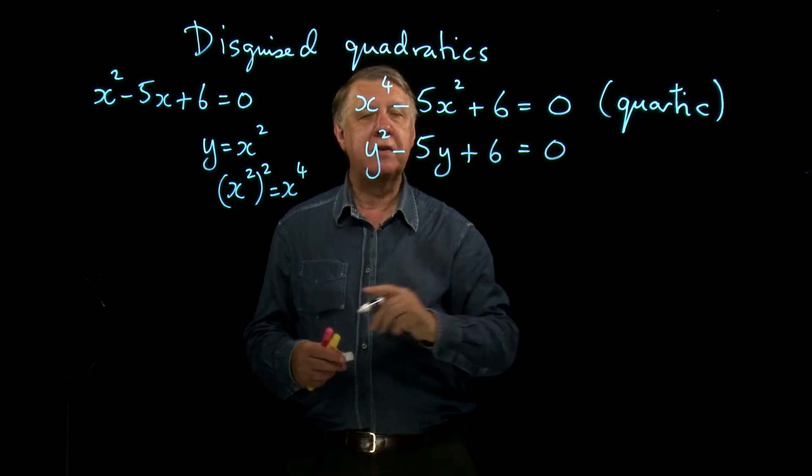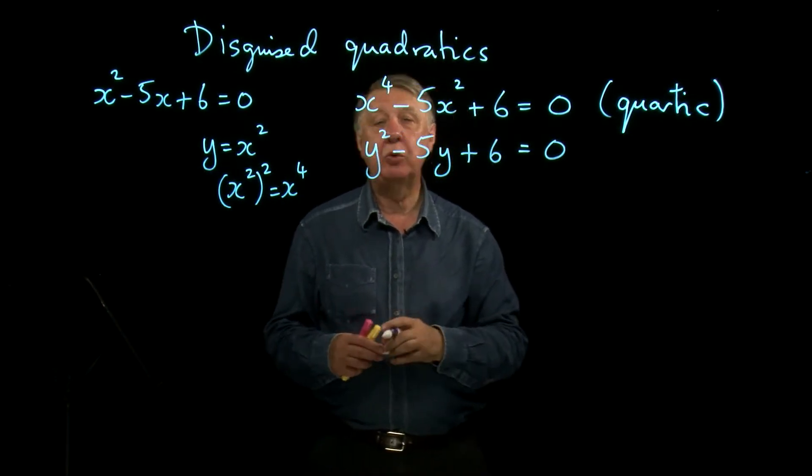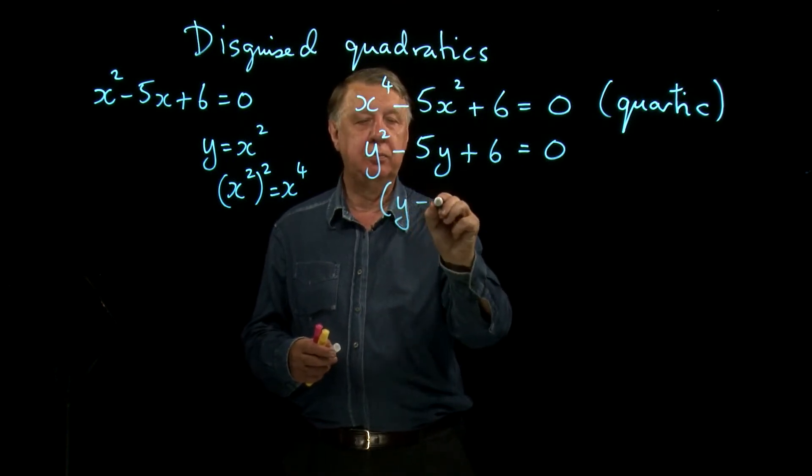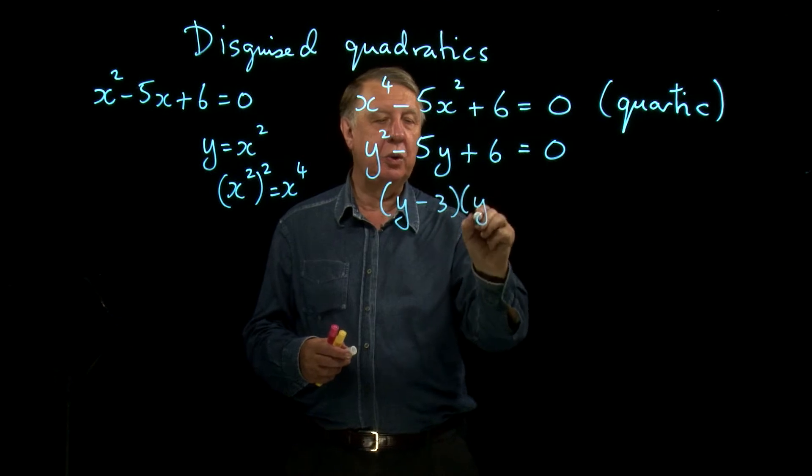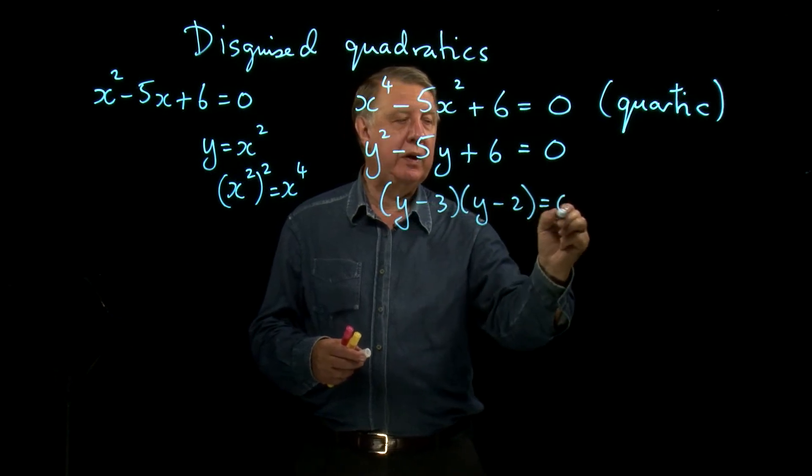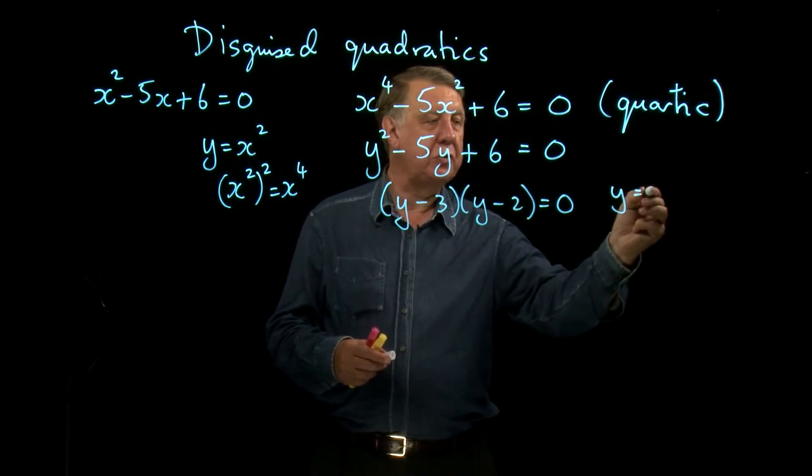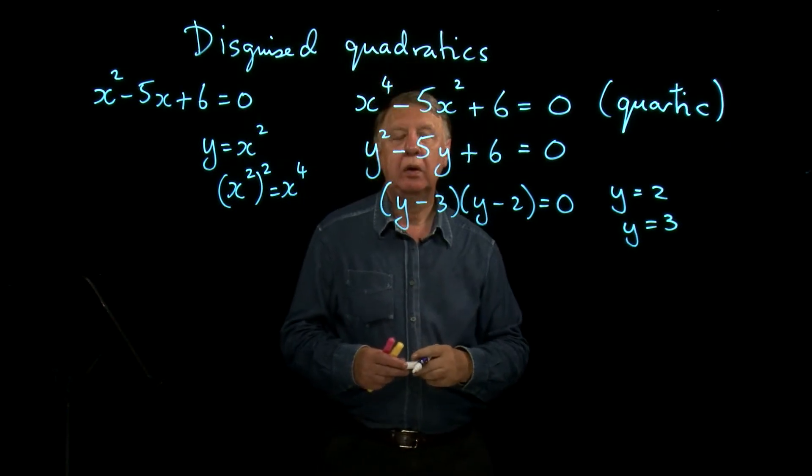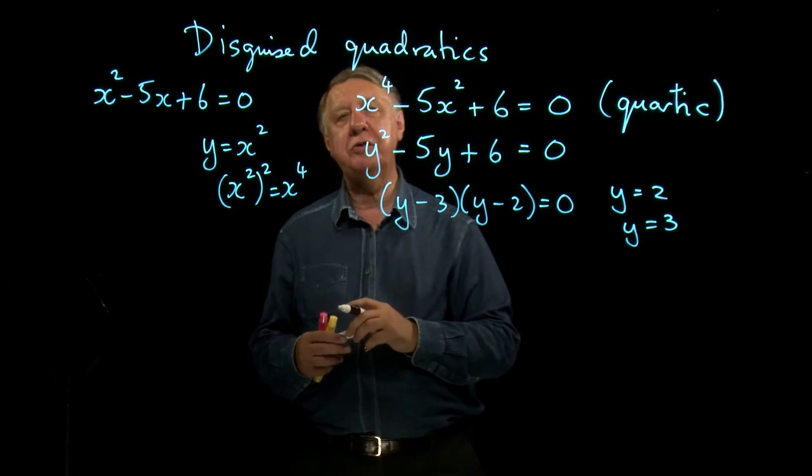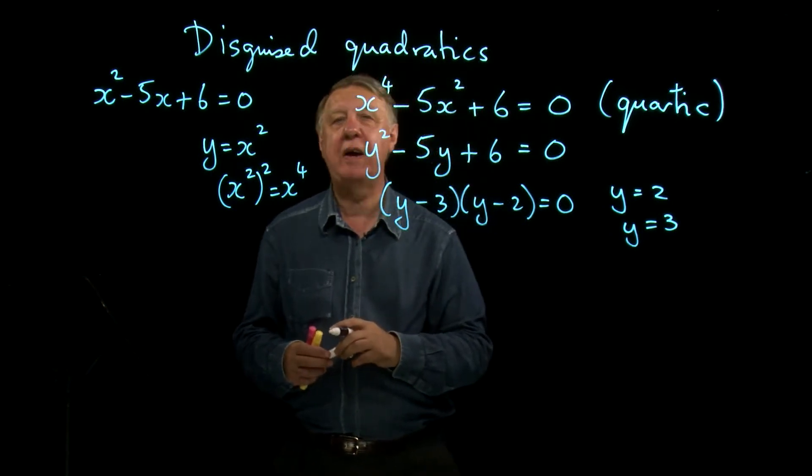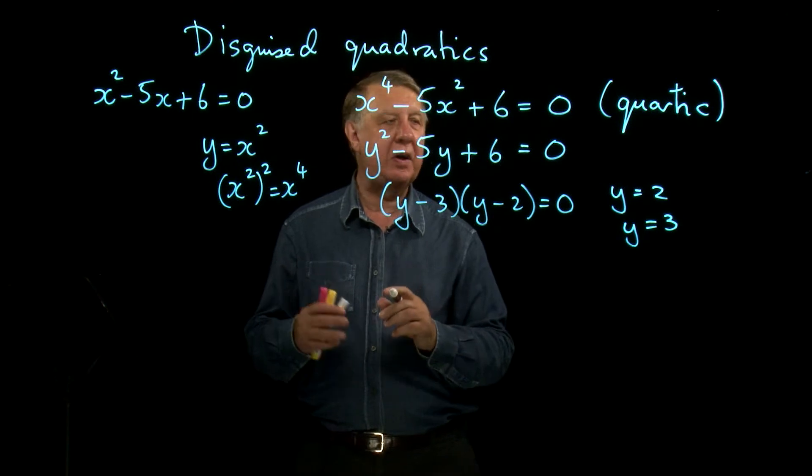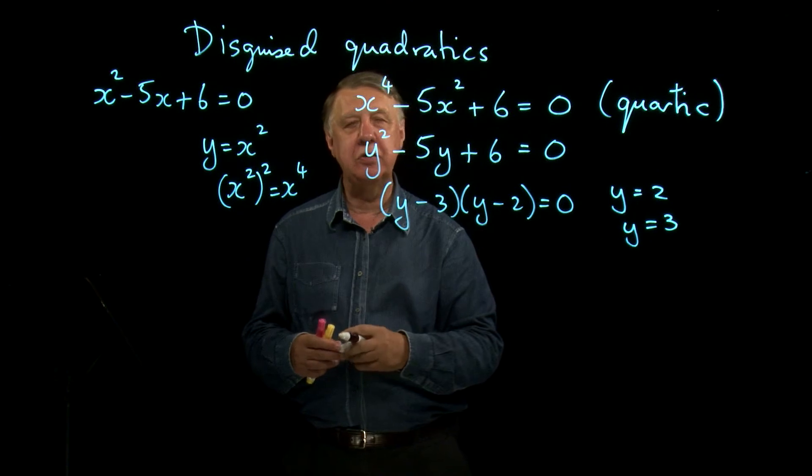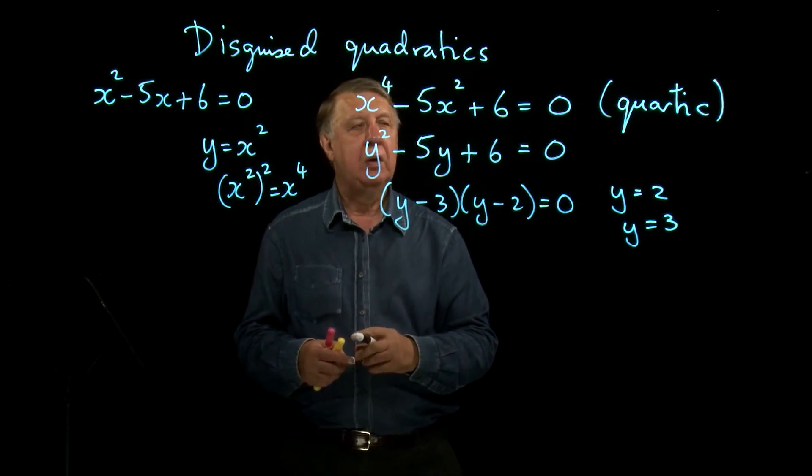And so in front of me, I have an ordinary quadratic, which I can solve in the usual way, giving me y equals 2 or y equals 3. Now, you must always be careful to finish off the question correctly. In fact, more mistakes are often made right in the last steps than this part, which students usually get quite well.